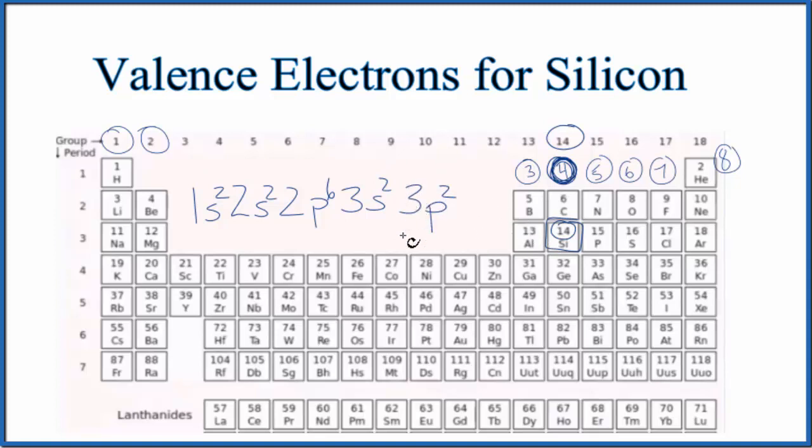But we're only interested in the valence electrons for Si. And those are the electrons in the third energy level, the highest energy level. Think of it as the outer shell.